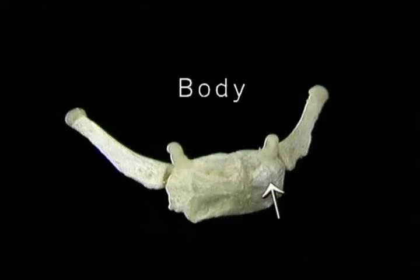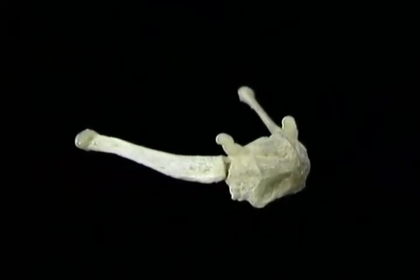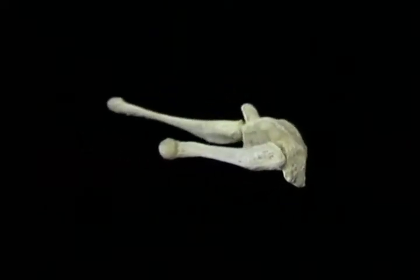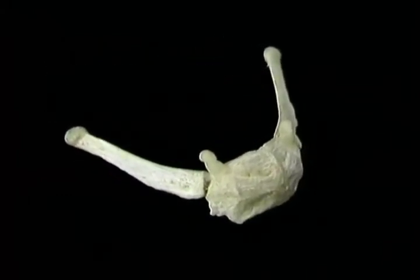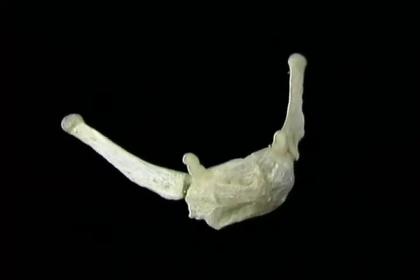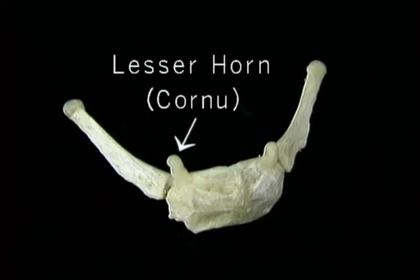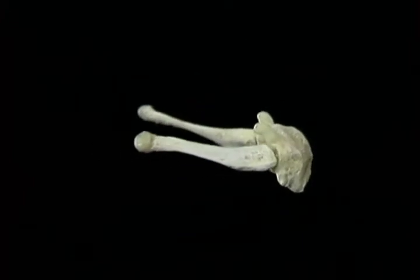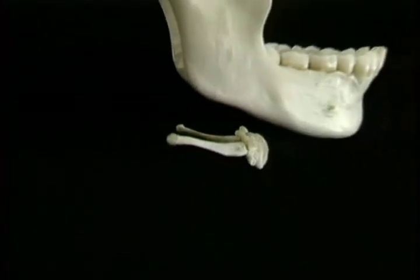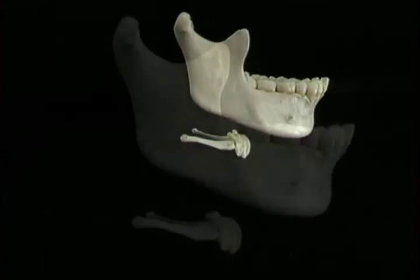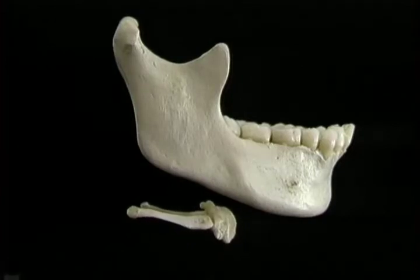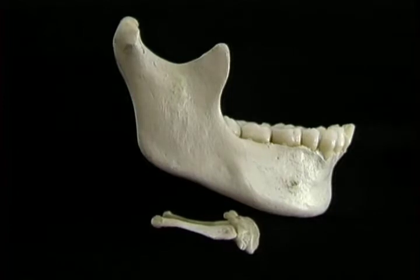The hyoid bone is a slender, U-shaped bone suspended just beneath the mandible. It isn't directly attached to any other bone. Together with its attached muscles, the hyoid bone has two important functions: it holds up the tongue, which sits above it, and it holds up the larynx, which hangs below it. It also transmits the force of muscles that help to open the jaw. The broad central part is the body, with a forward-facing convex upper surface and a deeply concave lower surface. The long slender parts on each side are the greater horns, attached to the body by small synovial joints. The small projections are the lesser horns. The hyoid bone can be moved upwards, downwards, forwards, and backwards by the muscles attached to it.